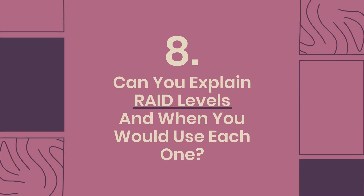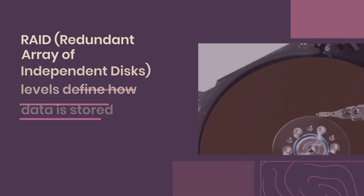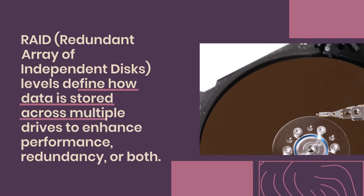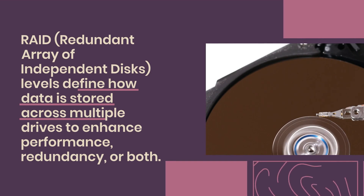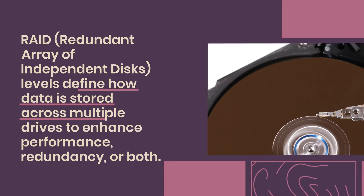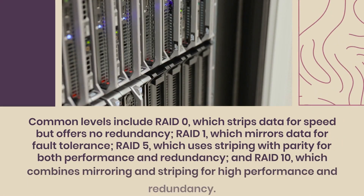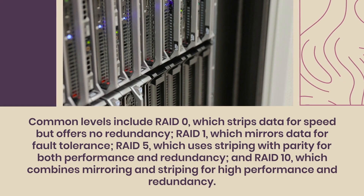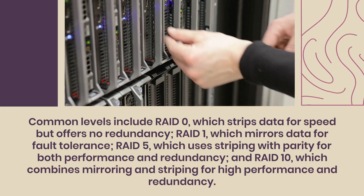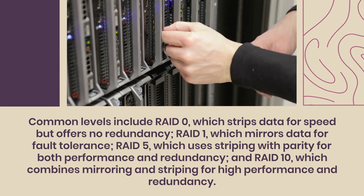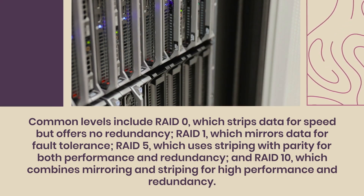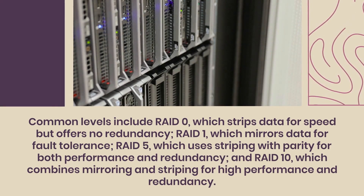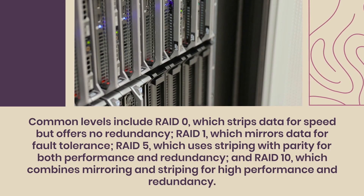Question 8: Can you explain RAID levels and when you would use each one? RAID, Redundant Array of Independent Discs, levels define how data is stored across multiple drives to enhance performance, redundancy, or both. Common levels include RAID 0, which strips data for speed but offers no redundancy; RAID 1, which mirrors data for fault tolerance; RAID 5, which uses striping with parity for both performance and redundancy; and RAID 10, which combines mirroring and striping for high performance and redundancy.